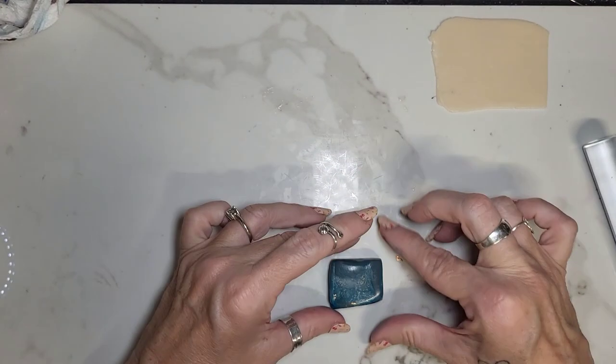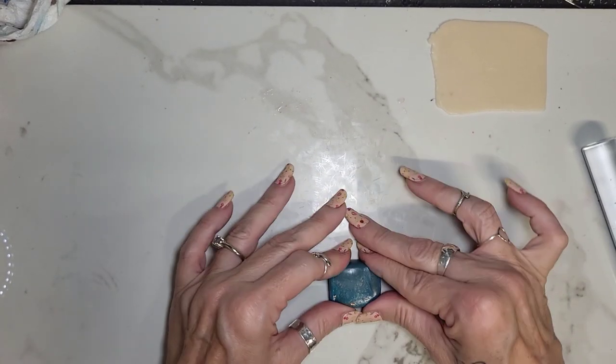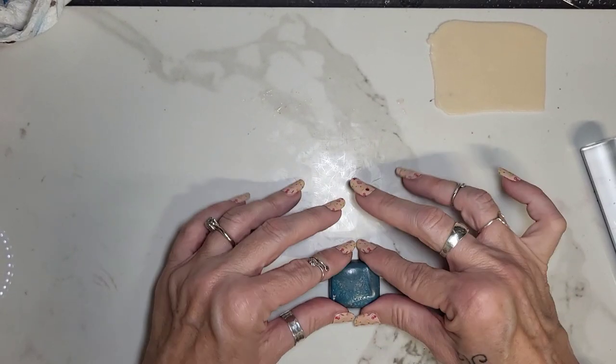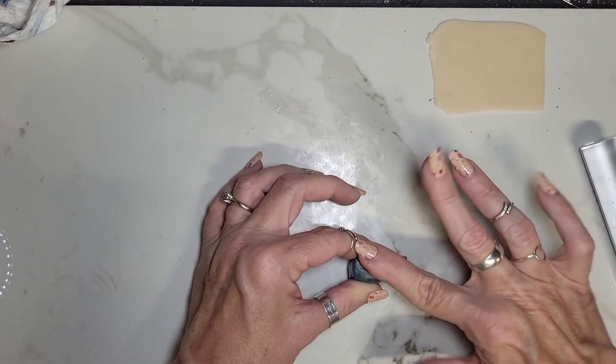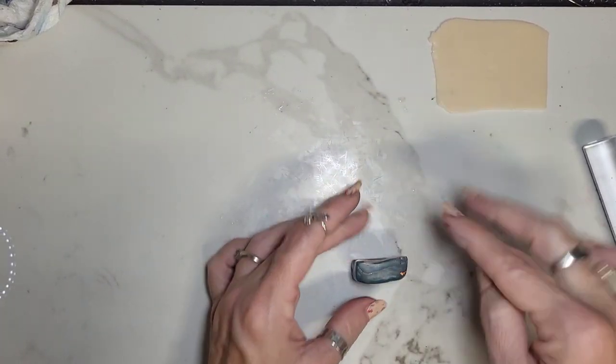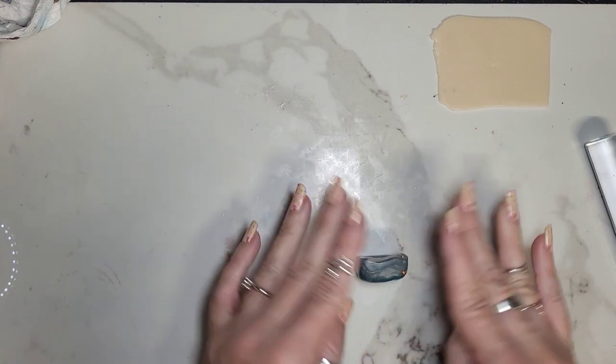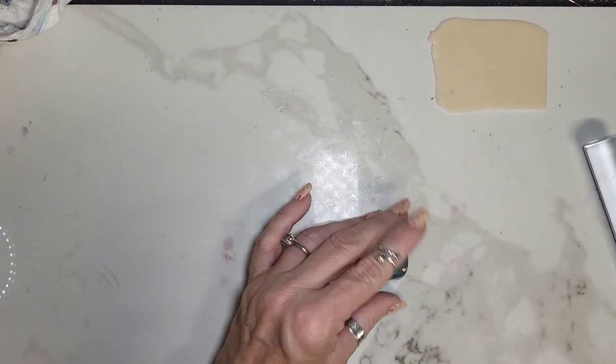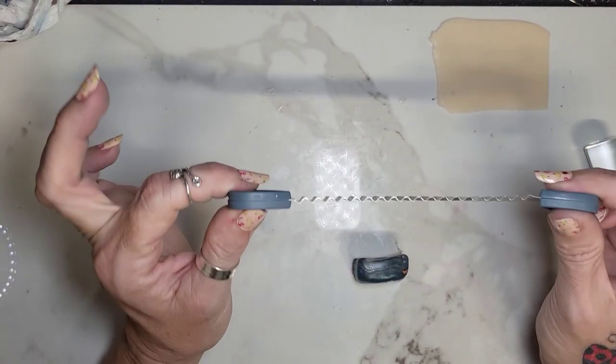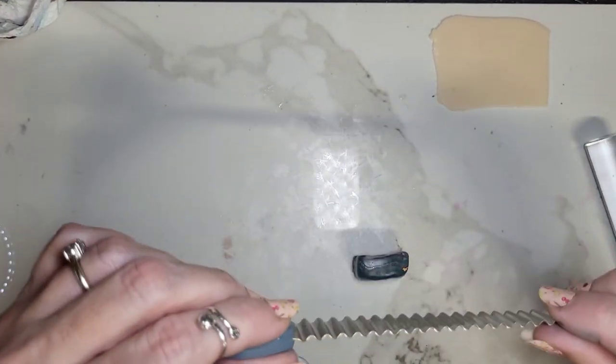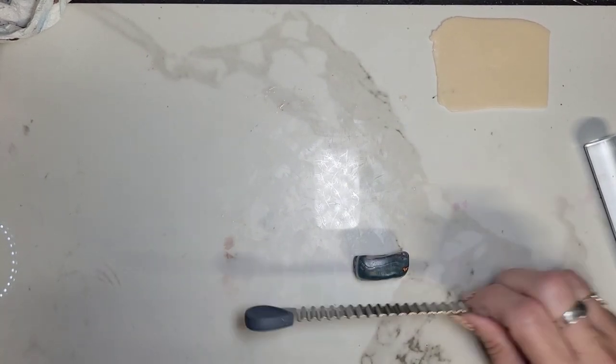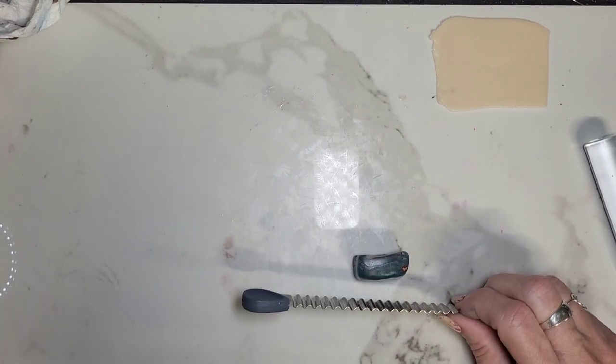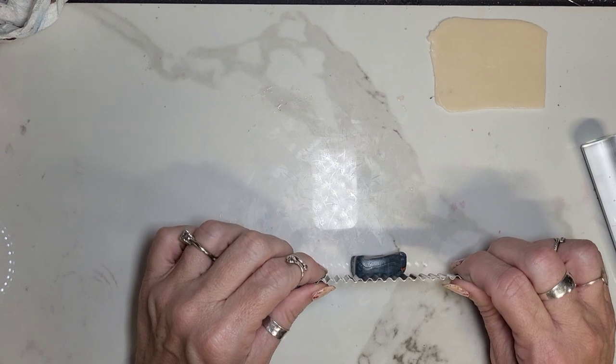So once you have your little cube, you're going to put it in place on top. Like so. You're going to turn it on its side so those lines are on the top. Like that. And then I'm going to take my wavy blade and I'm going to slice straight down into the stripes. Like so.